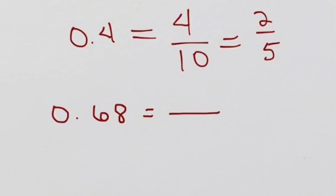I'm going to create a fraction where the 68 goes in the numerator and 100 goes in the denominator. The 100 has two zeros. They correspond to the two digits after the decimal.